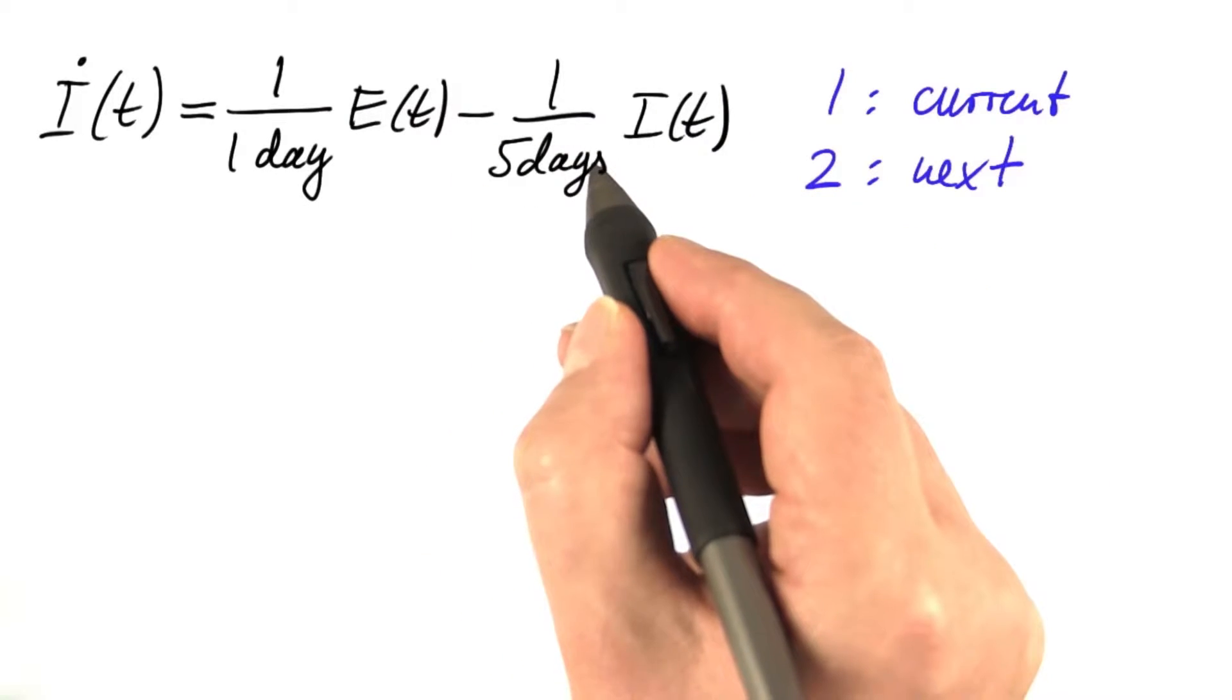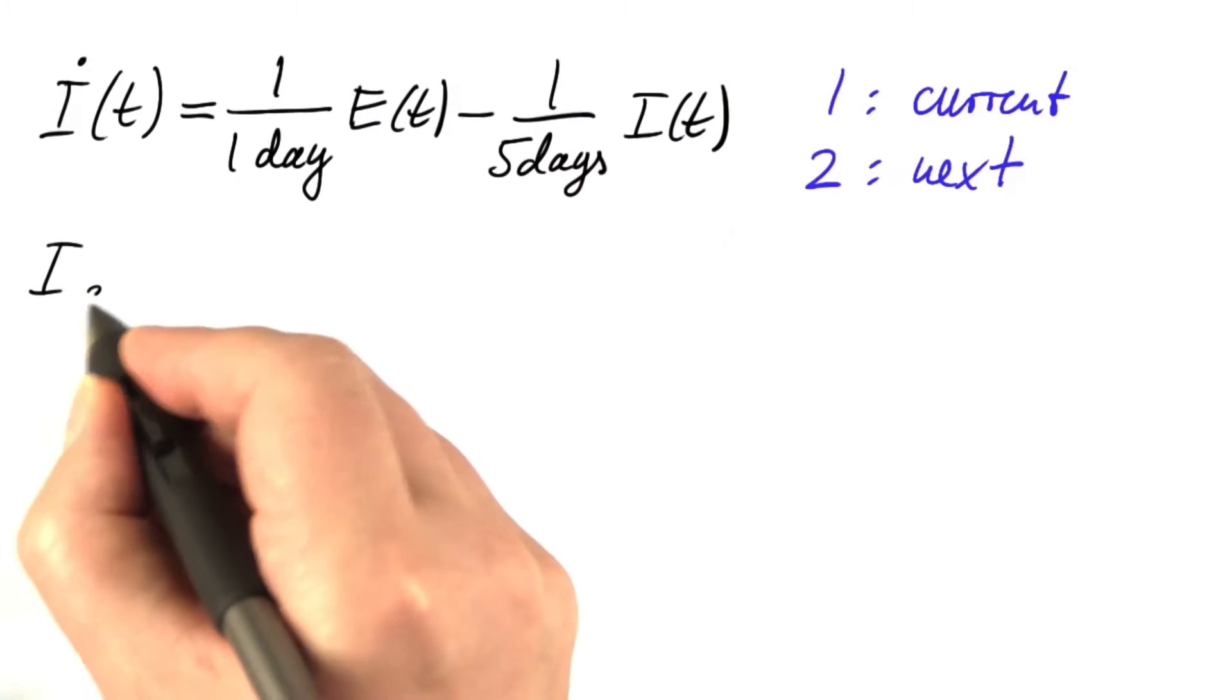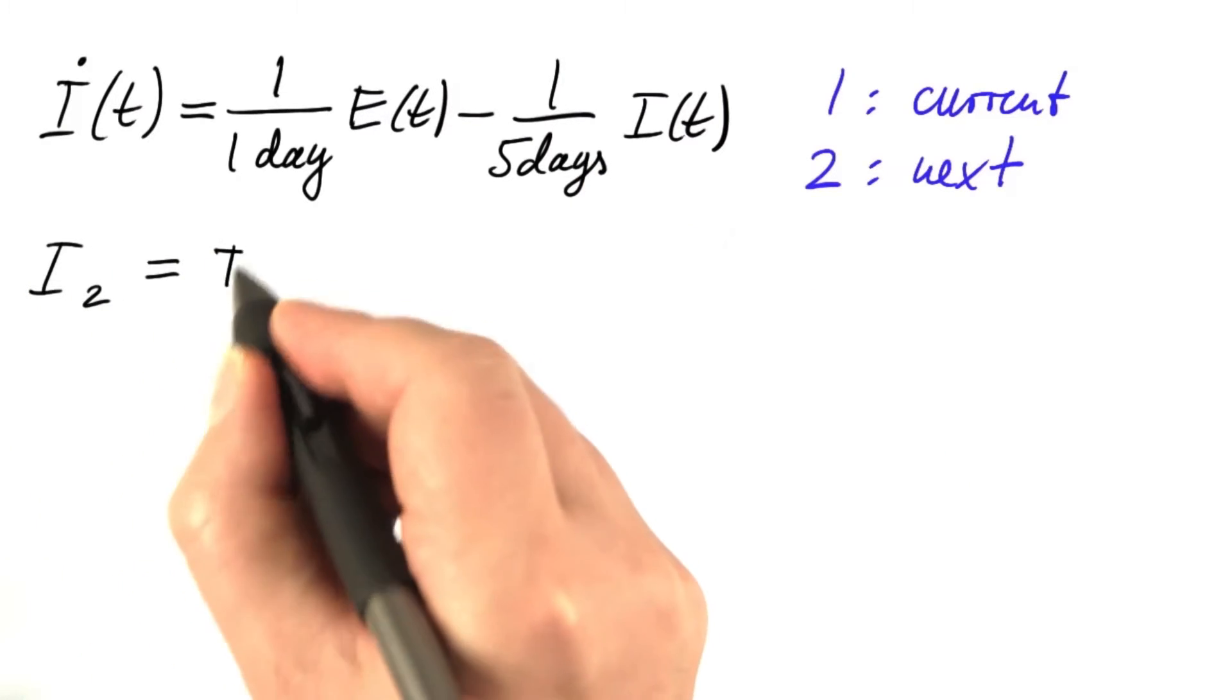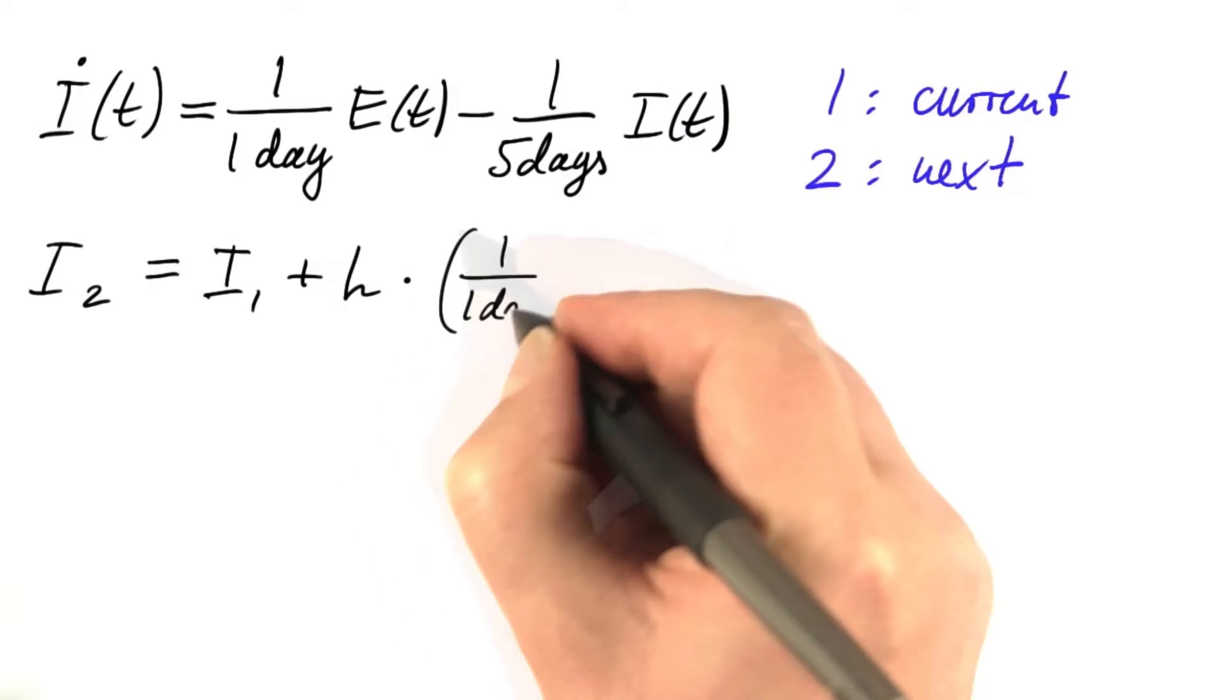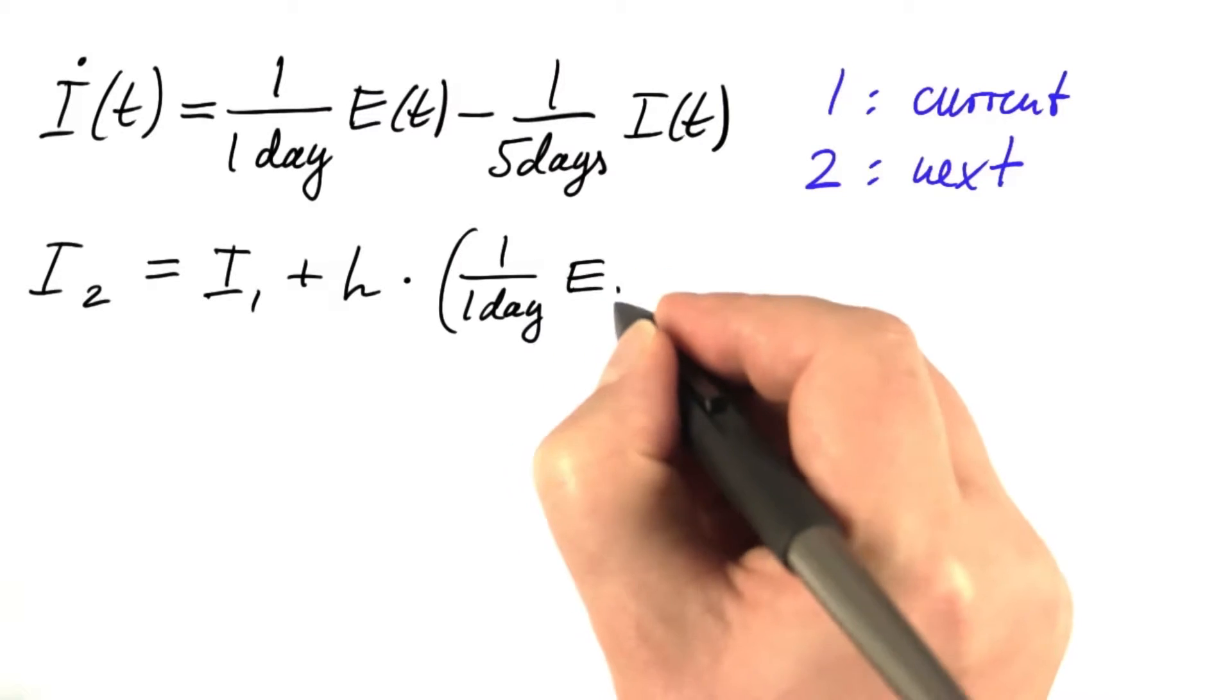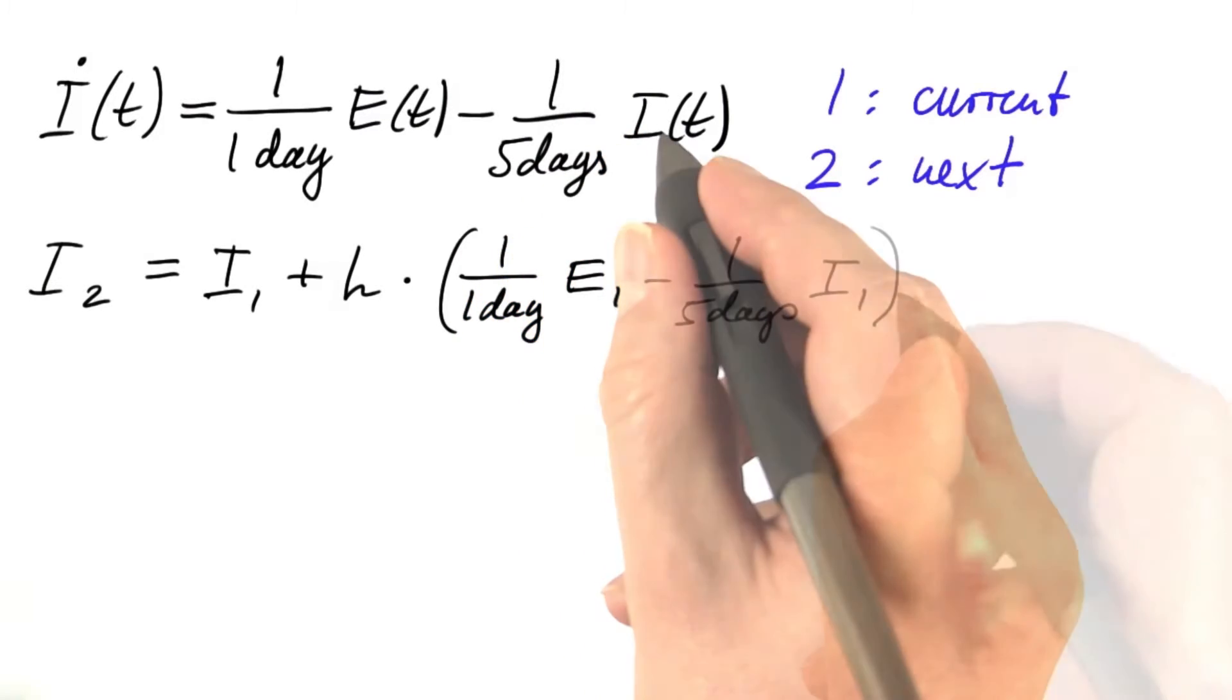If we were implementing forward Euler, we would be doing the following. i2, the value for the next step, equals the current value plus the time step times the current rate of change, which is 1 over 1 day, e1, minus 1 over 5 days, i1.